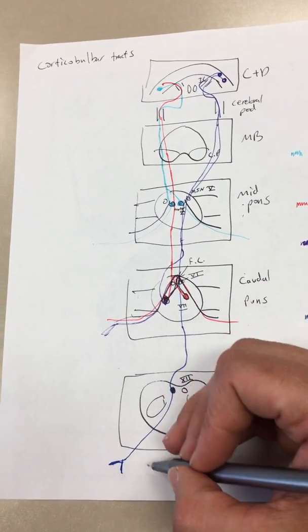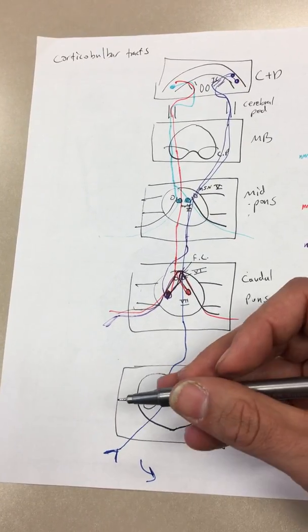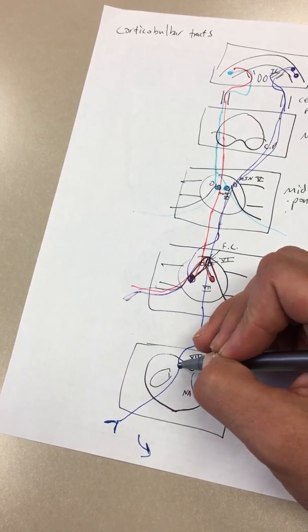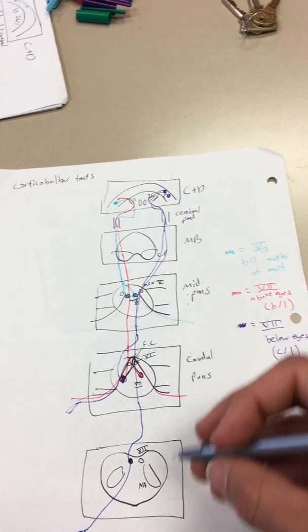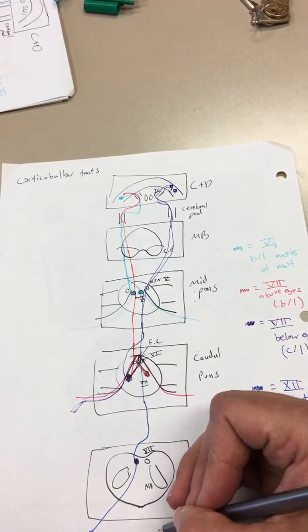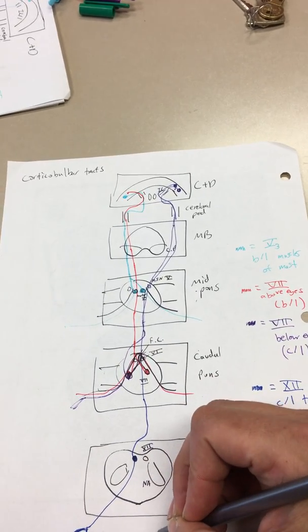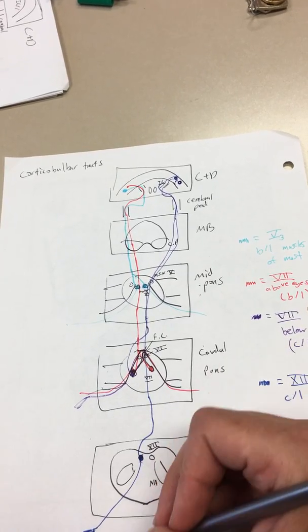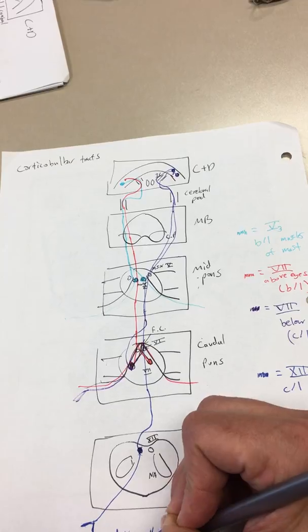And remember, tongue muscles actually push the tongue in the opposite direction. So, if I want to move my tongue left, I'm activating my right hypoglossal nucleus, but my left cortex. Remember, tongue pushes away. You can also remember that tongue will point towards the nucleus that's damaged. If we have two structures pointing here, and I knock out this nucleus, I knock out the ability to do this, and so now my tongue is pointing towards the nucleus that was affected.